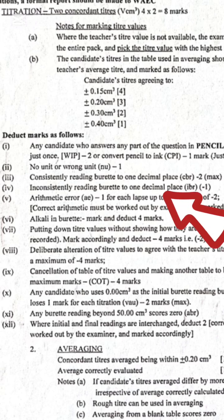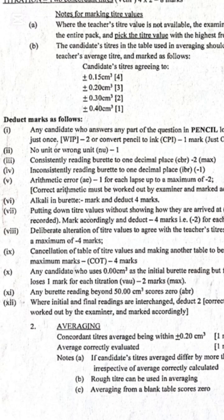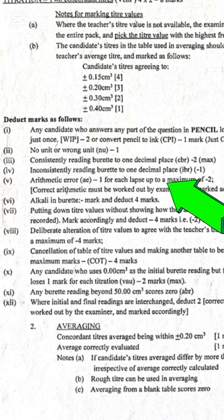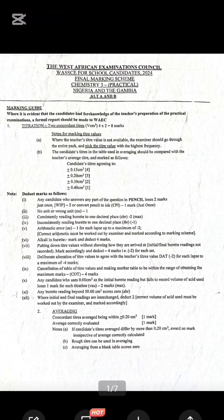Number four: inconsistently reading the burette to one decimal place — that's minus one. Number five: arithmetic error — that's minus one for each, up to a maximum of minus two. If you add minus two to what we already have, you can see the running total.